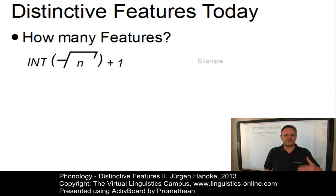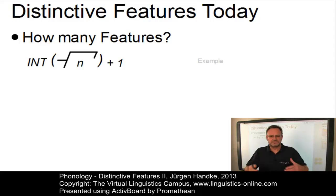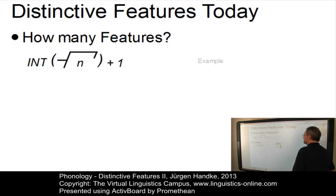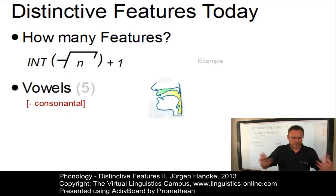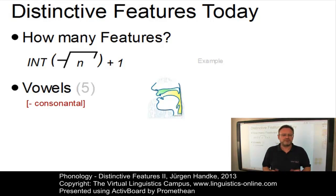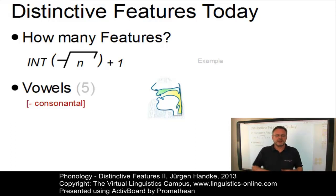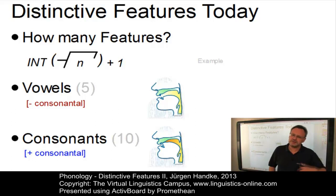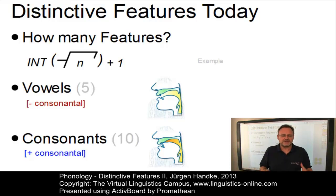To distinguish vowels and consonants from one another, the superordinate feature consonantal is normally used. Vowels or vocalic features are all minus consonantal and their five features refer to the articulatory definition of vowels. Consonantal features, by contrast, are marked with the feature plus consonantal. As we've just calculated, we need 10 features at minimum to define consonants, and by and large the consonantal features are grounded in the active articulator.